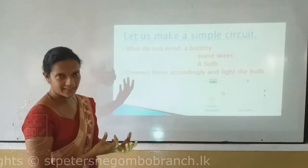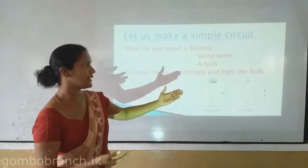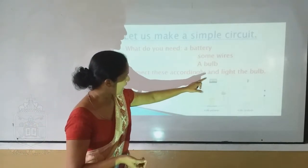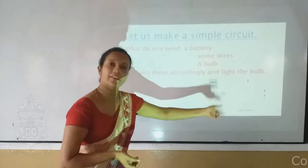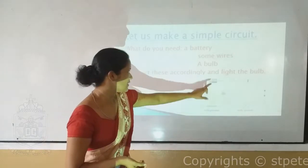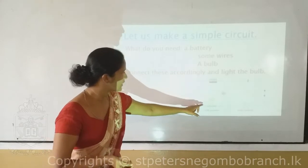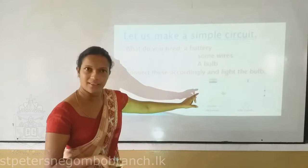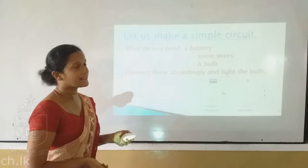How do you make a simple circuit? Simply, you have to connect these accordingly and light the bulb. This is the battery and I have drawn here a switch also, which is whether you can switch off the bulb or switch on the bulb. There is a bulb. The current flows from here to here, and then the bulb will light very easily. That is one simple thing that you can do at home to build a circuit.